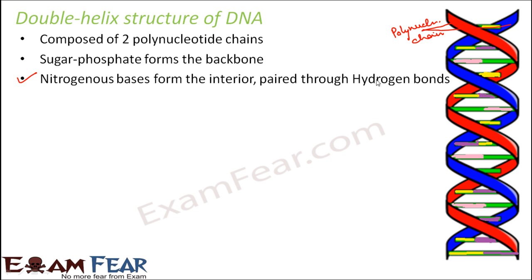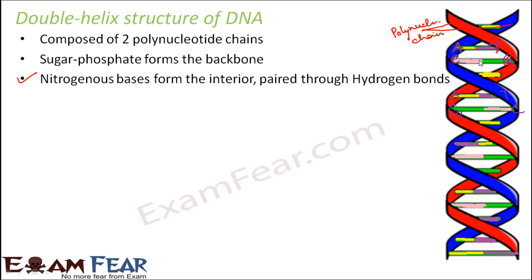Nitrogenous bases form the interior, paired with hydrogen bonds. These are the nitrogenous bases — A, C, G, T on one strand, and A, G, T, C on the other. The nitrogenous bases form the interior side; basically they form the stairs of the staircase and they are joined together by hydrogen bonds.